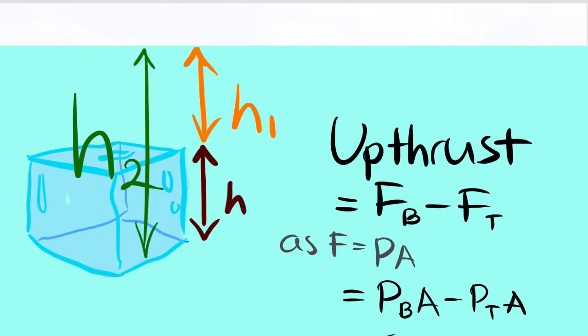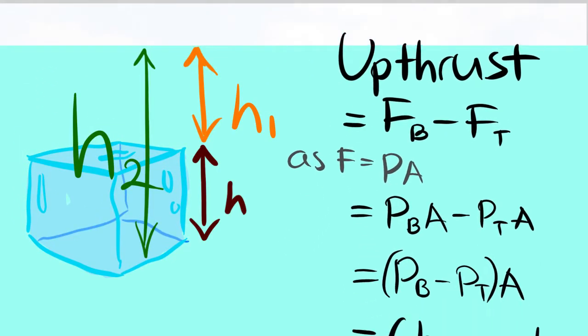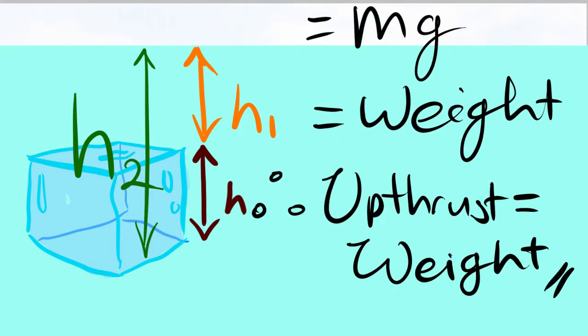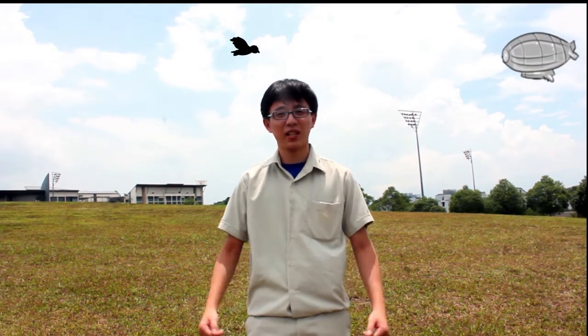Rewriting the equations, we can get that the upthrust is equal to the weight of the displaced water by, in this case, the ice cube. Hence, if the weight of the object is heavier than the displaced liquid, there will be a resultant force downwards, and thus the object will sink.